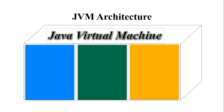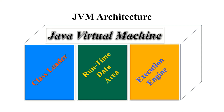Now, let's talk about JVM architecture. JVM, or Java Virtual Machine, has three specific components: class loader, runtime data area, and execution engine.